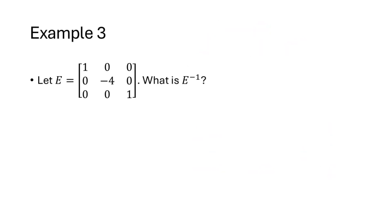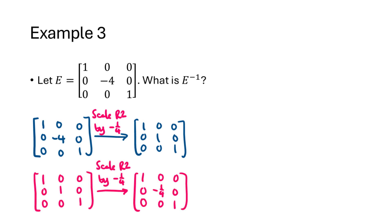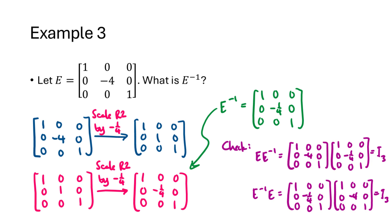Because our row operations are reversible, our elementary matrices are invertible. The inverse of an elementary matrix is the elementary matrix corresponding to the reverse row operation. For example, with matrix E that scales row 2 by negative 4, the reverse operation scales row 2 by negative one fourth. That gives us E inverse, and we can verify that E times E inverse and E inverse times E both equal I3.